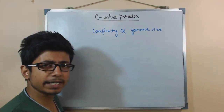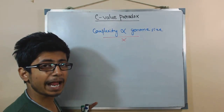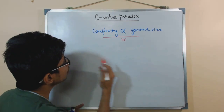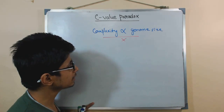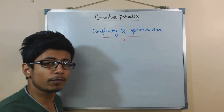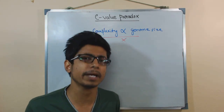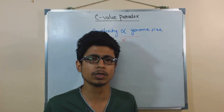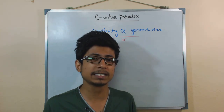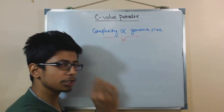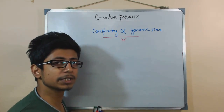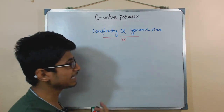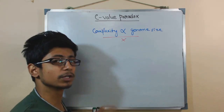But after further understanding and study, this idea proved to be completely false. People now know that complex organisms might not have a larger genome. For example, smaller organisms like salamanders, which are much less complex than humans, contain a greater amount of genomic content than we do. So genome size does not determine complexity, and you cannot predict genome size by looking at the complexity of an organism.